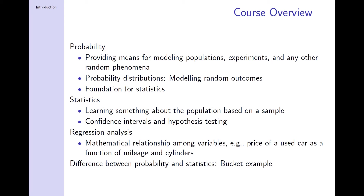For example, if you are interested in the quality control of car tires, then your population would be all car tires out there. The population is characterized by parameters. Those parameters are unknown and will always be unknown. But in order to learn something about those parameters — for example, when does a tire need to be replaced — you have to use a sample.